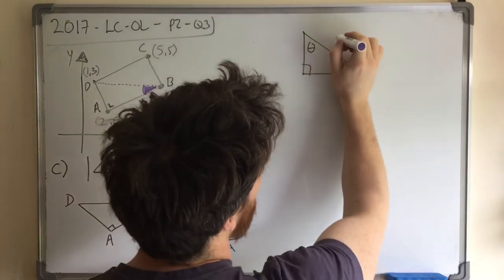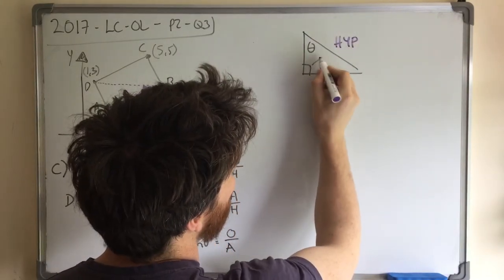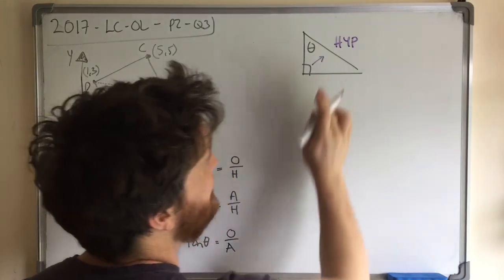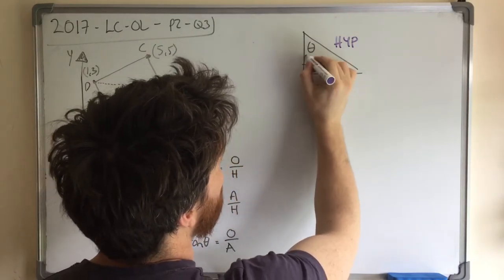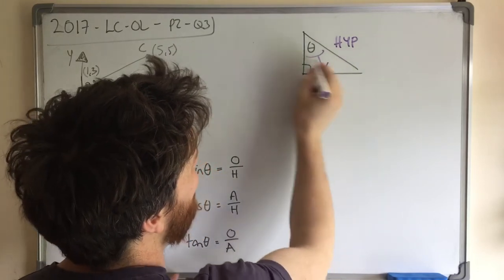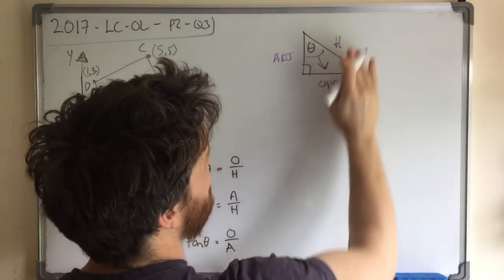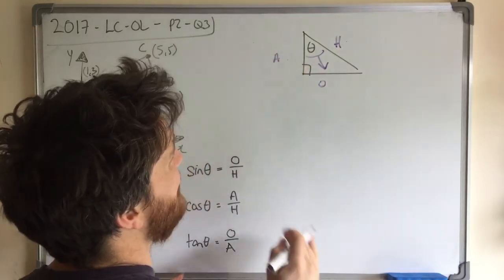So it's always opposite the 90 degrees. That's always your hypotenuse. The next one I always try to find is the one opposite the angle. And that's your opposite. And then over here is your adjacent ADJ. So that's your H, that's your O, and that's your A.